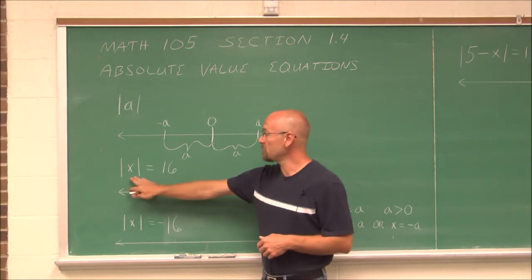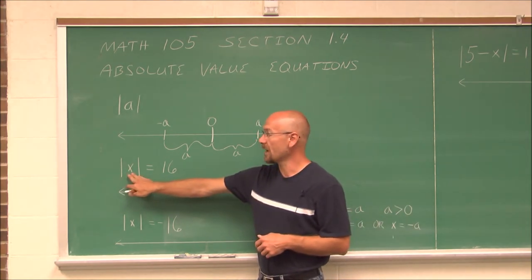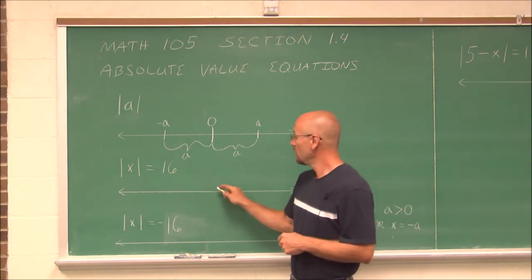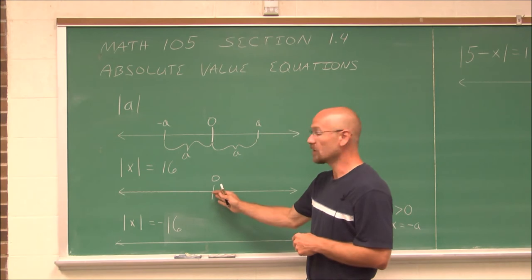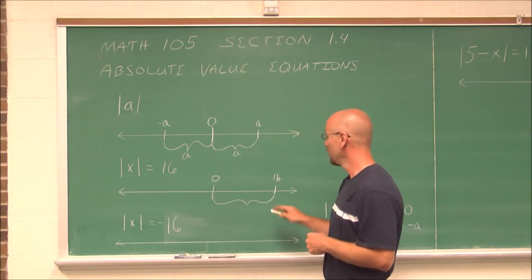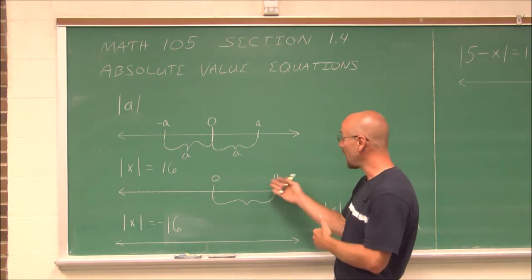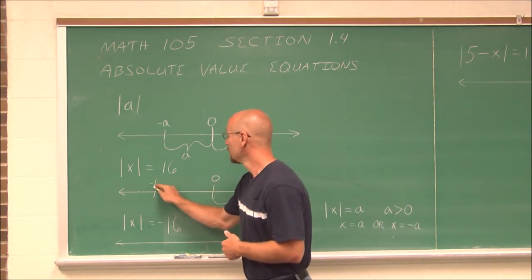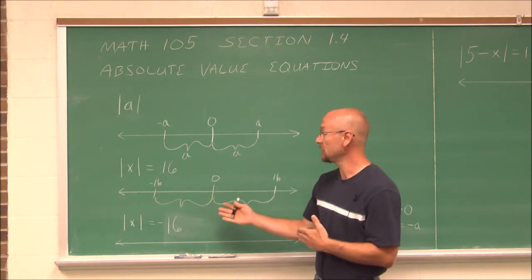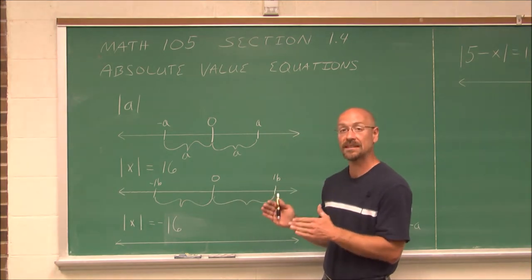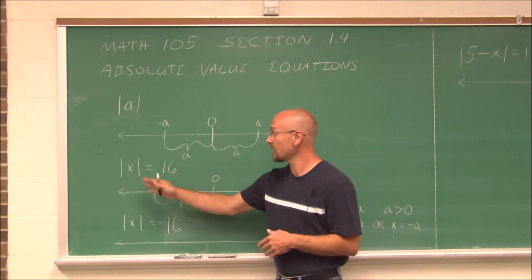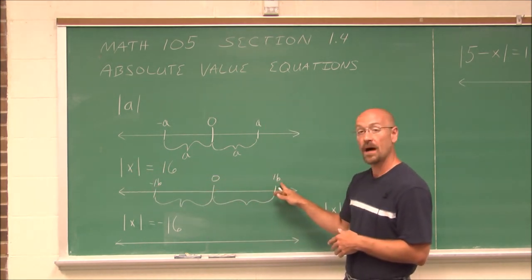If we have the absolute value of x and we're told it equals 16, there are two possibilities. From 0, we could have 16 units to the right, being positive 16, or we could have 16 units to the left, being negative 16. Both of these are 16 units from 0, so x could be either negative or positive.